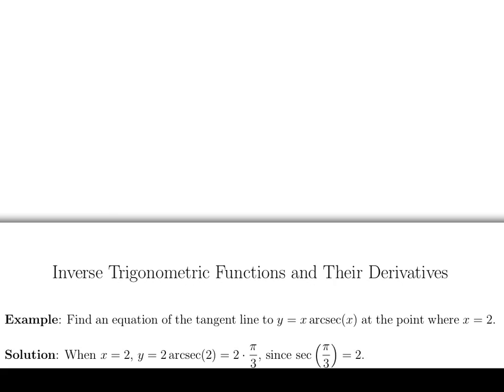I guess you could then ask, why is secant of pi over 3 equal to 2? Well, remember that cosine of pi over 3 is equal to 1 half, so secant is the reciprocal, so flip it upside down. That makes secant of pi over 3 equal to 2.